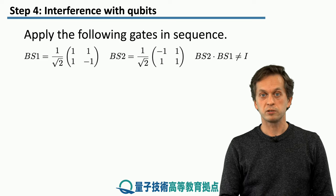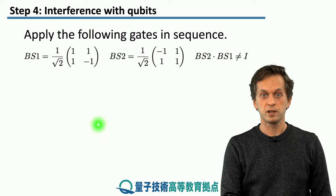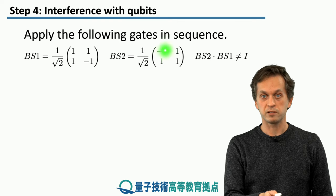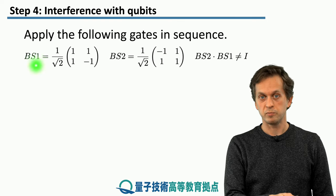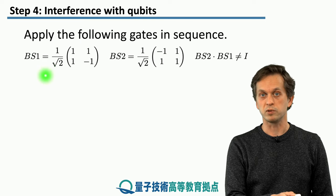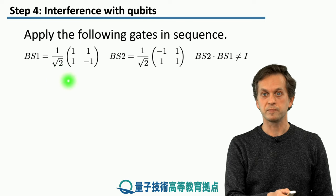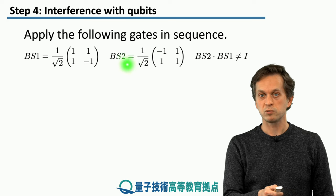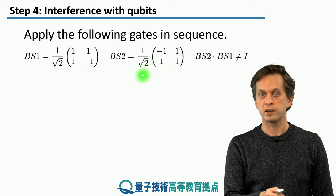In particular, let's consider two transformations. Let's call them BS1 and BS2. You can see that BS1 is actually our previous Hadamard gate. But let's just keep calling it BS1, for reasons that will become apparent a little bit later.